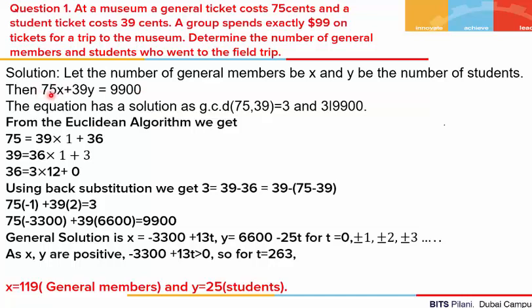We will form the Diophantine equation 75x + 39y = 9900. There were x general members and each member spent 75 cents, so the total cost was 75x. Each student member spent 39 cents on the ticket and there were y students, so the total cost on student tickets was 39y, and the total is 9900. We have converted our 99 dollars into cents.